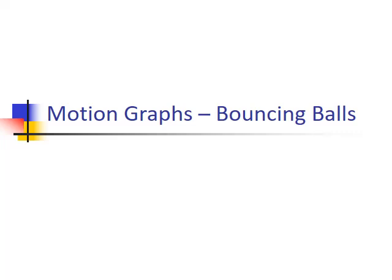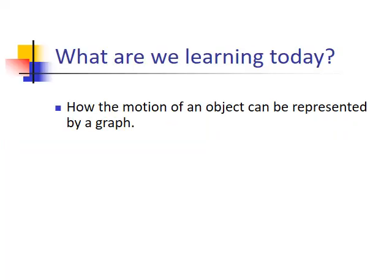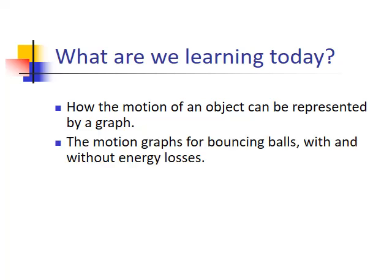Welcome to the higher physics office mix on motion graphs, particularly bouncing ball scenarios. We're looking at how the motion of an object can be represented by a graph, specifically for bouncing balls with and without energy losses. Bouncing ball graphs are covered at National 5 level but only quickly and often not well understood because the graphs can look confusing.